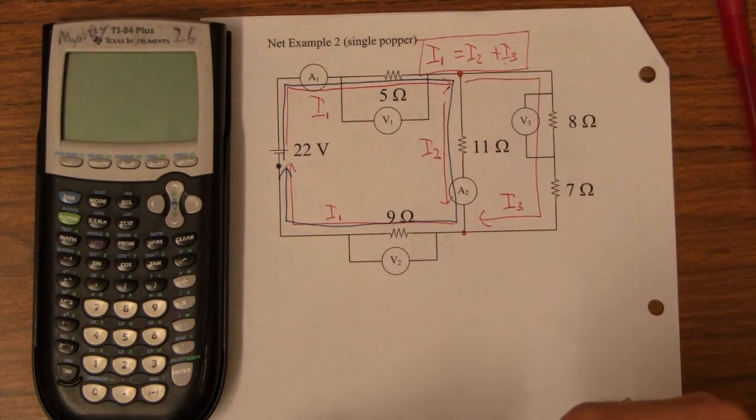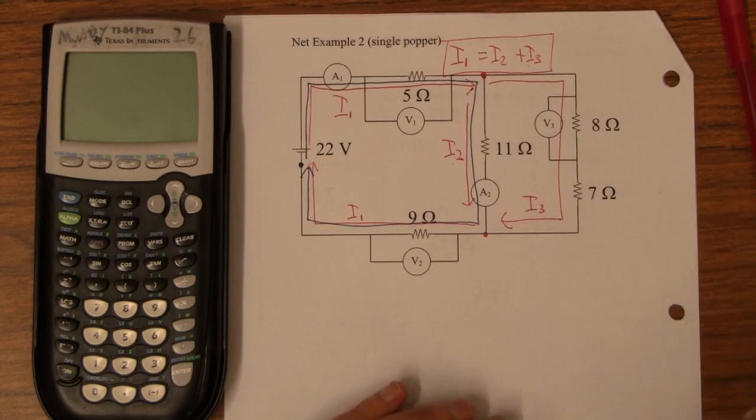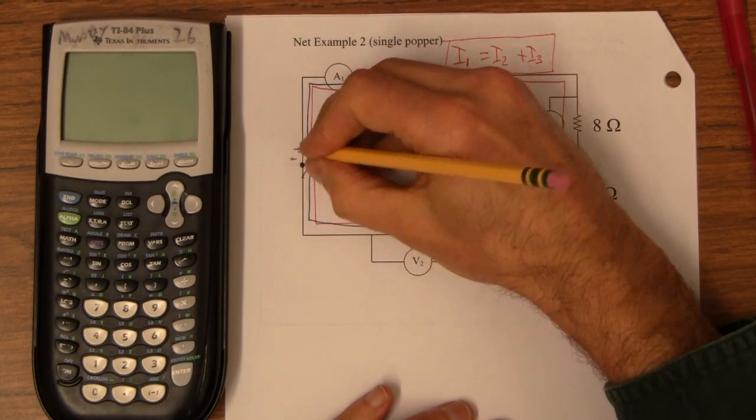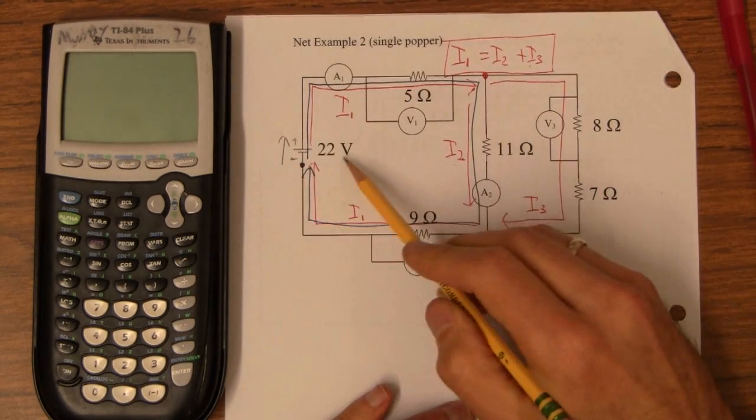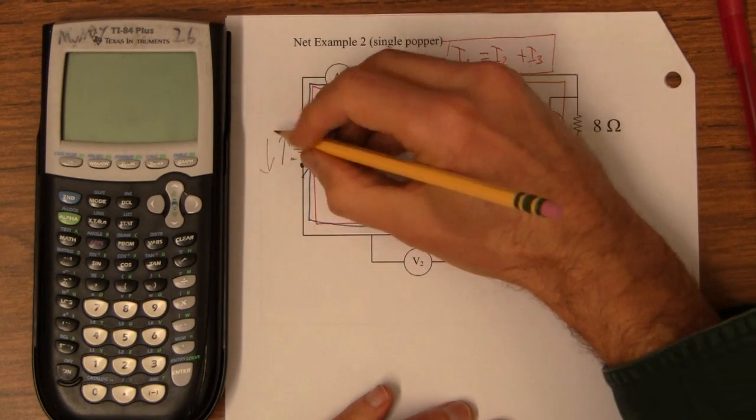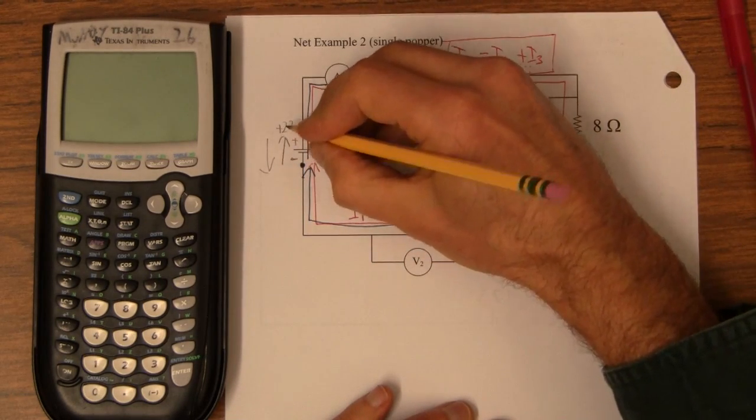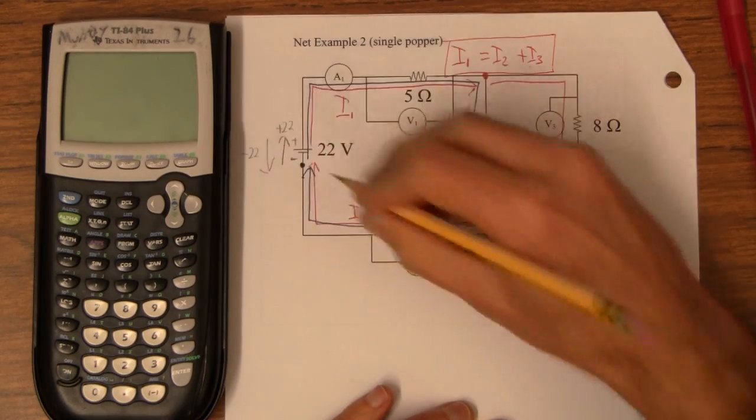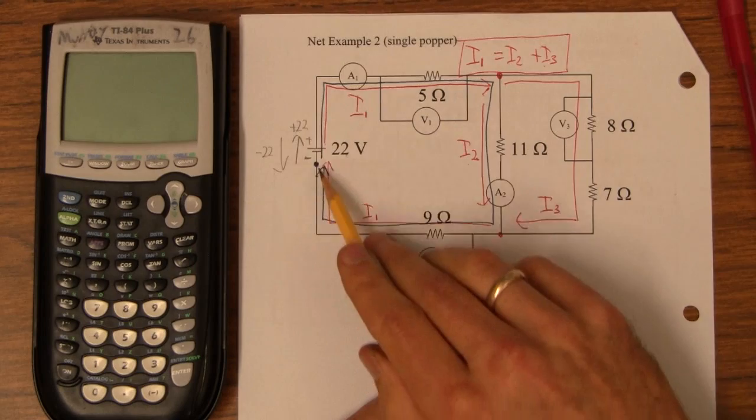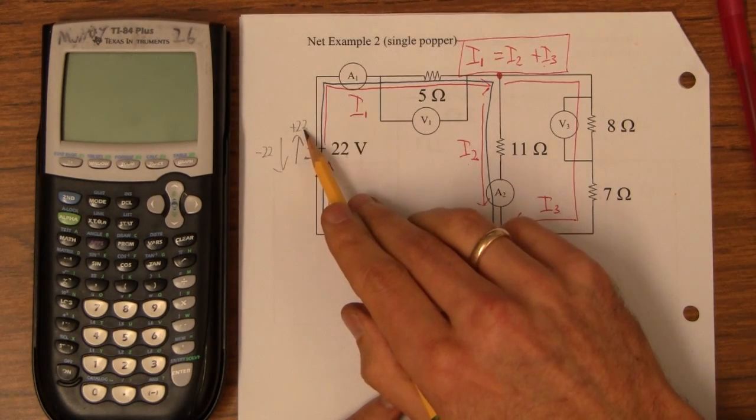Now, the rule for this, the rule for going through these things is, if you go through a battery from the negative side to the positive side, if you go that way, it's positive 22. And if you go the other way, it's negative 22. So, this would be positive 22. That would be negative 22. So, if you go from negative to positive through a battery, you go up 22 in volts.